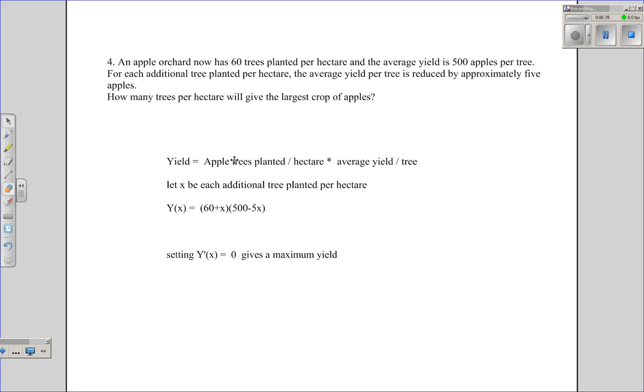The yield is just the apple trees planted per hectare multiplied by the average yield per tree. You can let x equal each additional tree that's planted per hectare. You get a yield formula in terms of x to be 60 plus x. So if I add additional trees, the average yield goes down by five. So 60 plus x multiplied by 500 minus 5x. Working all this out, finding the derivative of a really straightforward function, setting that derivative equal to zero gives a maximum yield amount. That's all the help I can give you with that question. That should be straightforward at number four.